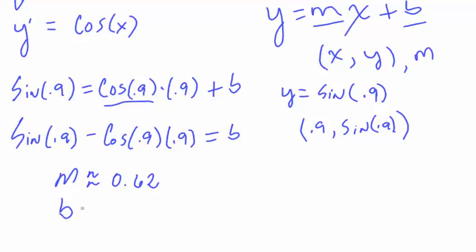And now b is approximately. So we're going to type all that in. So we have sine of 0.9 minus cosine of 0.9 times 0.9. That was our x. And let's see what we get here. We get rounding to two decimal places 0.22. So we have our m and our b now.